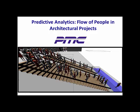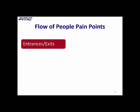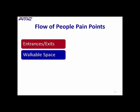There are several pain points associated with the flow of people in architectural projects. Is the number of entrances and exits optimal, including emergency-only ones? Under normal and emergency conditions, is the walkable space sufficient to avoid overcrowding?